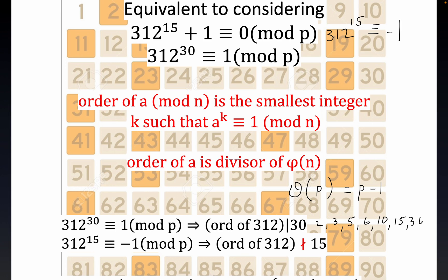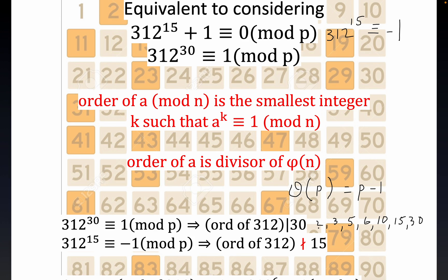That's a lot of values to check for the order of 312. However, we can also note from our original statement that 312 to the 15th is NOT congruent to 1 mod p, meaning the order does not divide 15. So we can exclude 3, 5, and 15 from our list — we only need to check 2, 6, 10, and 30.